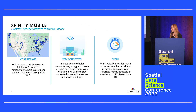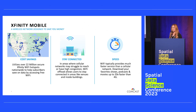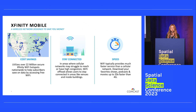An additional benefit is staying connected. In areas where cellular networks may struggle to reach or have high congestion, Wi-Fi offloads allow users to stay connected in areas like venues or inside buildings. Imagine you're at the Super Bowl trying to capture the game-winning touchdown, but your data application does not load. Oftentimes a crowded venue can overwhelm a cellular network. As an XM subscriber, if there was a nearby Xfinity Wi-Fi hotspot, you'd be able to use Wi-Fi to open the app and capture that game-winning moment.